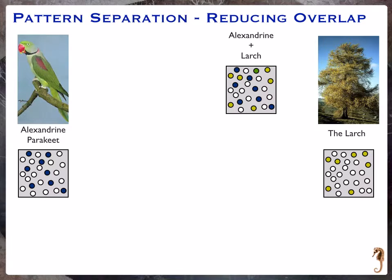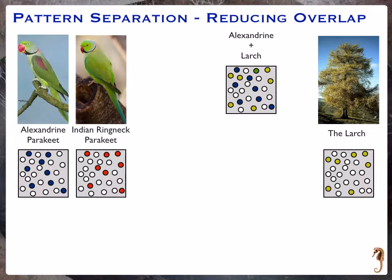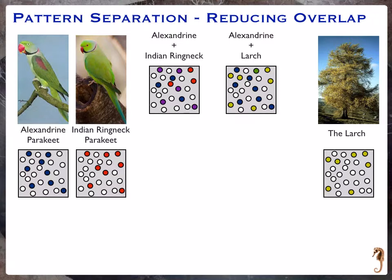The problem comes in if I instead showed you this Indian ring-neck parakeet. It's very similar, and so in many places it's going to have a similar representation both in visual cortical regions and also in the medial temporal lobe. If we stick these two on top of each other we see a whole bunch of purple units — those are ones that these two items have in common. The problem comes about when we want to rapidly learn something different about these two parakeets: if memory is stored in the strengths of connections between these units, if you're using the same units you're going to overwrite the memory.